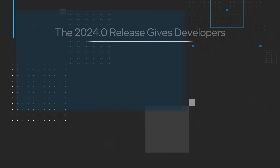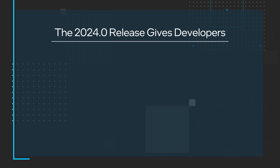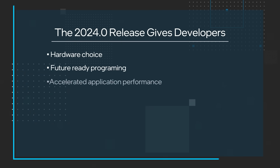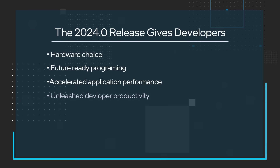Next up, I'm pleased to announce that we've just released our fourth major release of OneAPI and AI developer tools. With this release, we've taken major steps forward to enable open, accelerated computing through standard-based software, giving developers hardware choice and performance. The 2024.0 release gives developers hardware choice, future-ready programming, accelerated application performance, and it unleashes developer productivity.